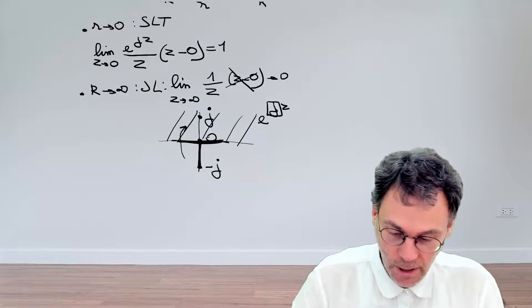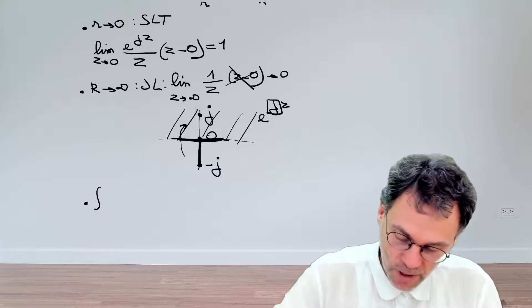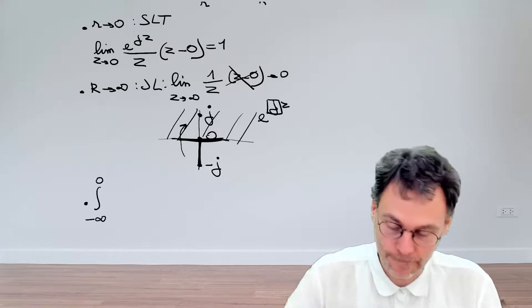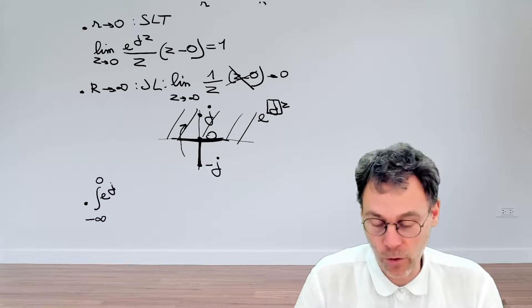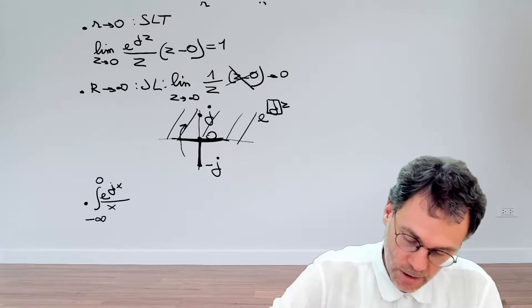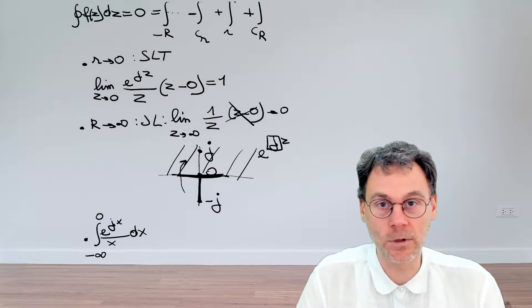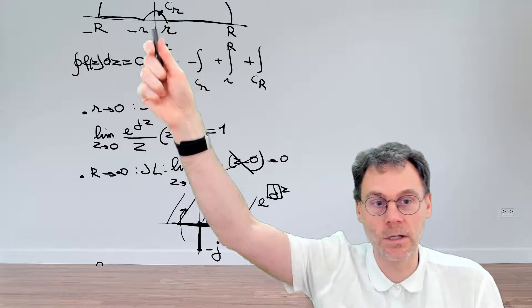Okay, let's take these two limits then and see what's left. So then we have the integral from minus infinity to 0 of exponential J. Well, here we're already on the real axis. So let's replace the Z by X. Okay, then we have the integral over our little segment here.